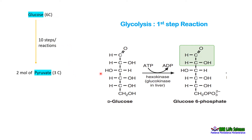Here we are seeing the first step in glycolysis, that is the phosphorylation of glucose. The glucose molecule, in the presence of hexokinase or glucokinase enzyme, the phosphate group from ATP is transferred to the sixth position of the glucose molecule and glucose-6-phosphate is generated. In this first reaction, we are seeing that two main enzymes are playing a role: one is hexokinase and second is glucokinase.